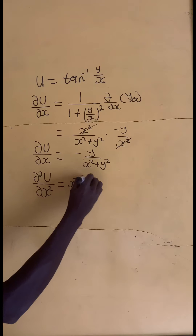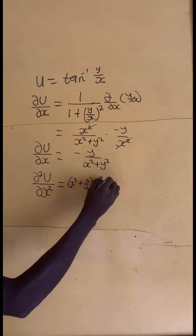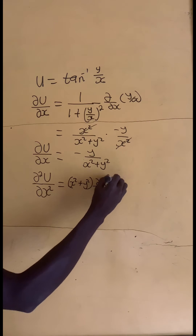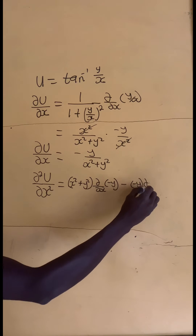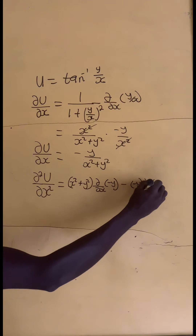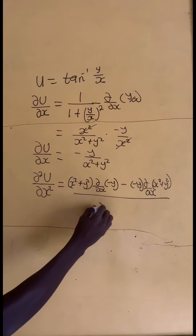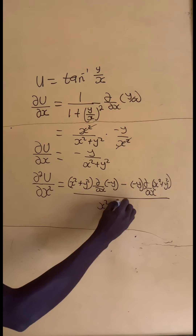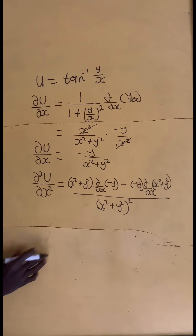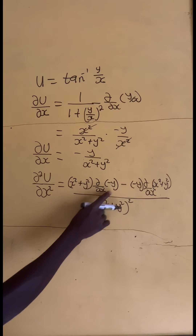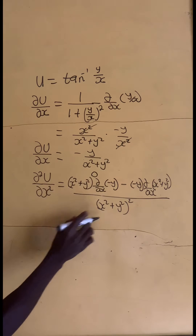We take the partial derivative of the numerator, that is negative y, with respect to x times the denominator, minus the partial derivative of the denominator, that is x squared plus y squared, with respect to x times the numerator, that is negative y. All divided by the denominator squared, that is x squared plus y squared, all squared. If I differentiate negative y partially with respect to x, I get 0. Zero times all this gives 0.